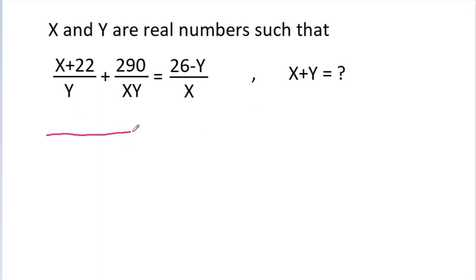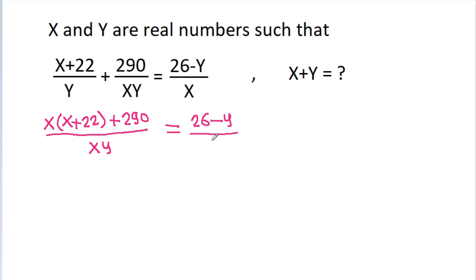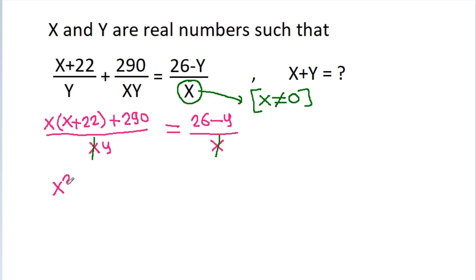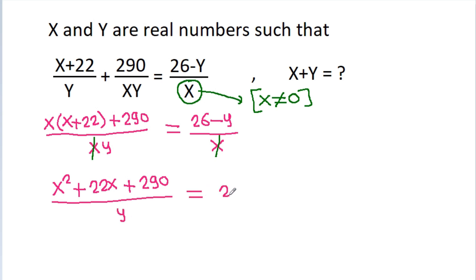So here x and y will be in the denominator, and we will multiply through to get x times x plus 22 plus 290 is equal to 26 minus y by x. Since x is in the denominator, x cannot be equal to 0, so we can cancel x from both sides. Then x squared plus 22x plus 290 by y is equal to 26 minus y.